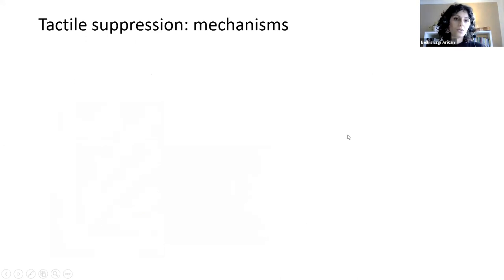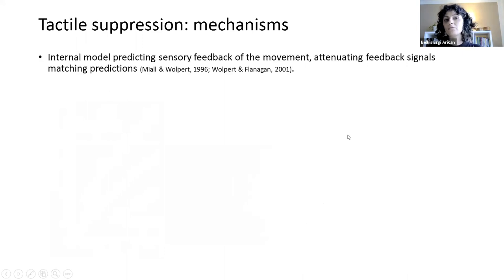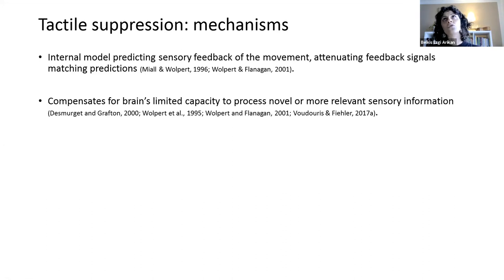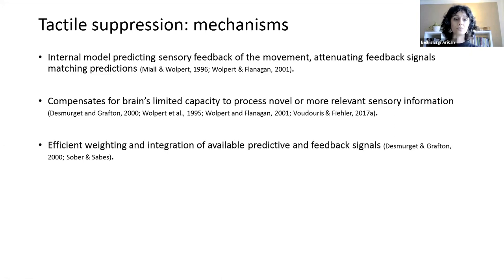Okay, so it's thought that suppression occurs as a result of an internal model that predicts the sensory feedback of the movement and attenuates these signals that match the predictions. And this is thought to compensate for our limited capacity to process more relevant or novel sensory information. And such a processing also requires an efficient weighting and integration of available predictive and feedback signals.